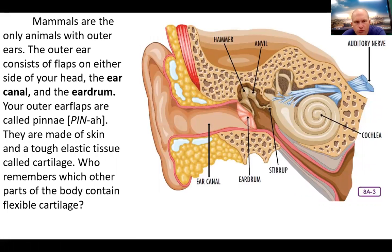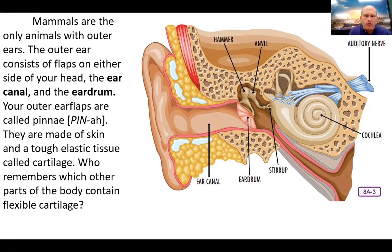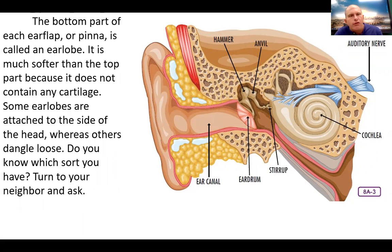Mammals are the only animal with outer ears. The outer ear consists of flaps on either side of your head, the ear canal, and your eardrum. Your outer ear flaps are called pinna. They're made of skin and tough elastic tissue called cartilage. The bottom part of each ear flap is called the earlobe.